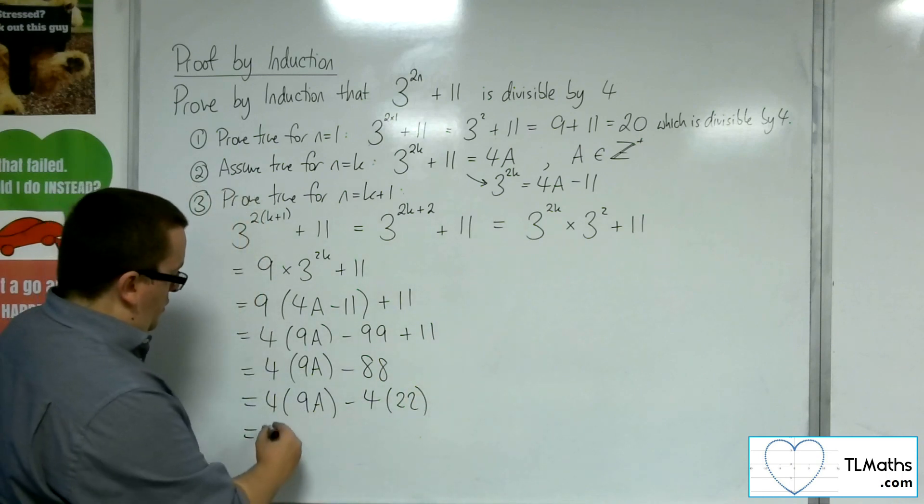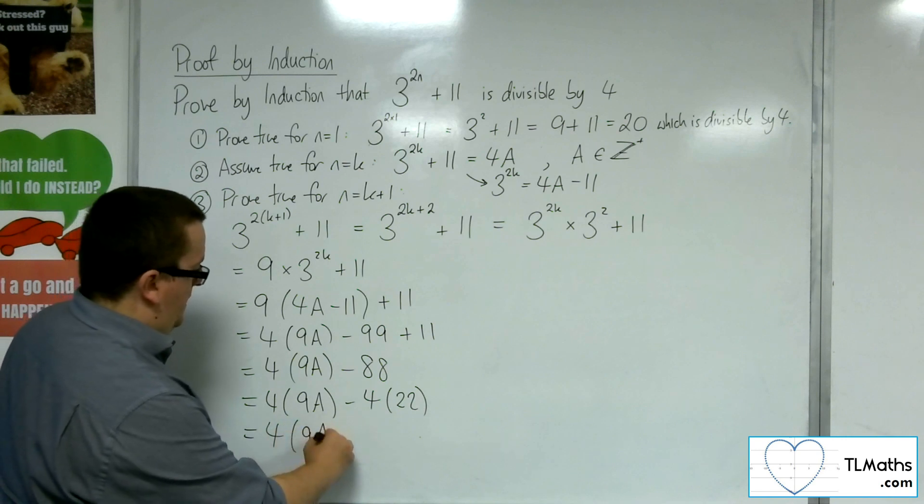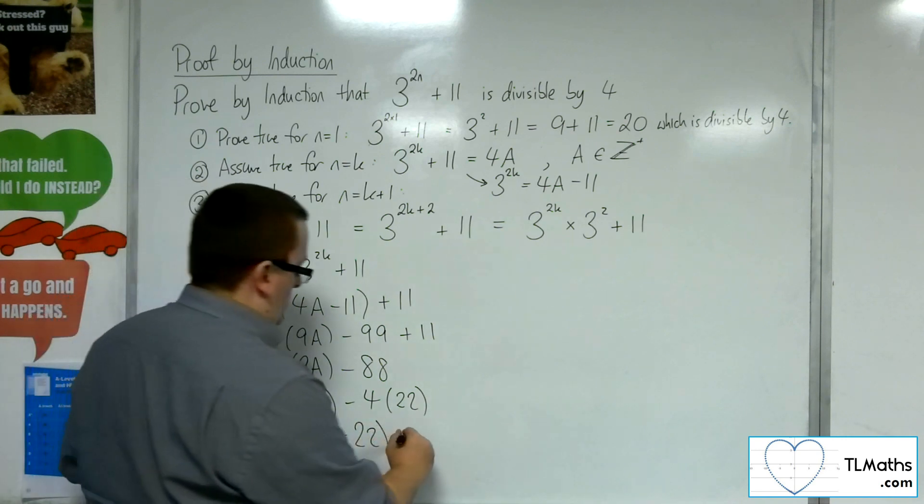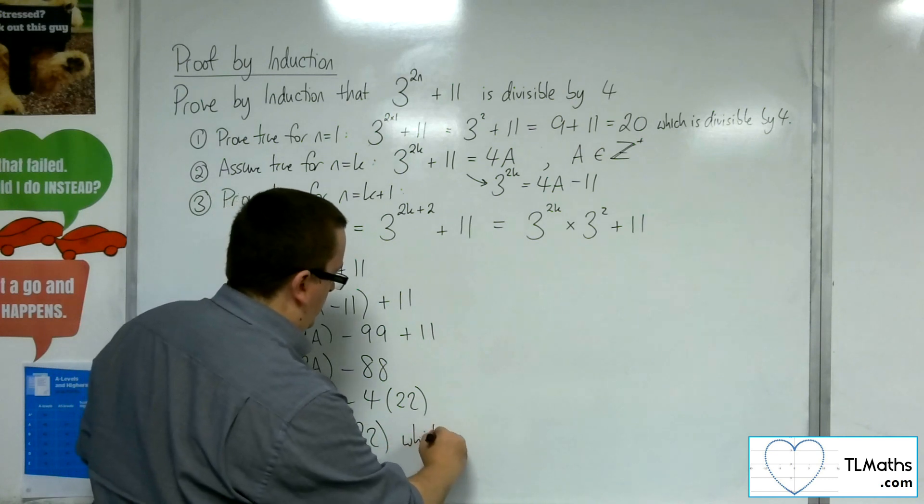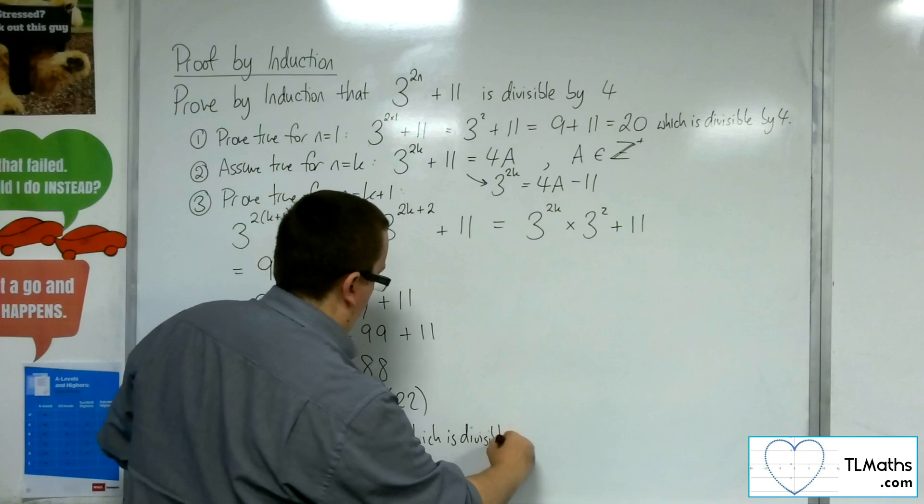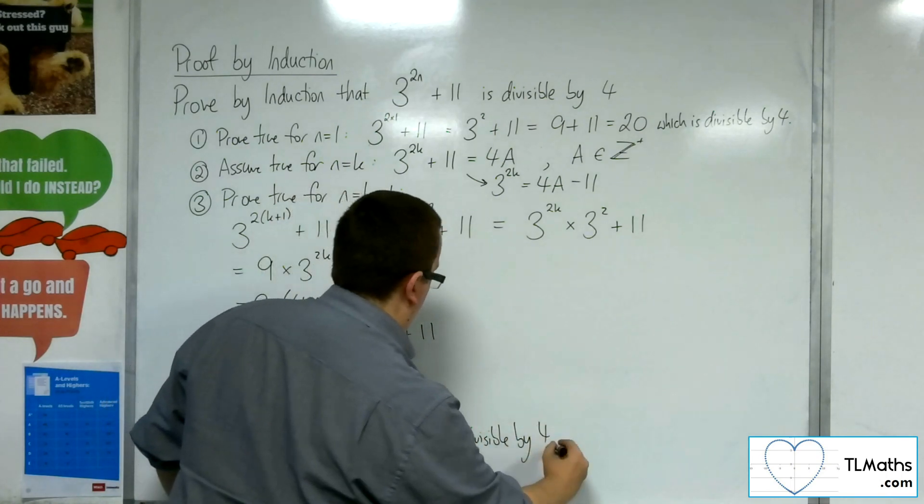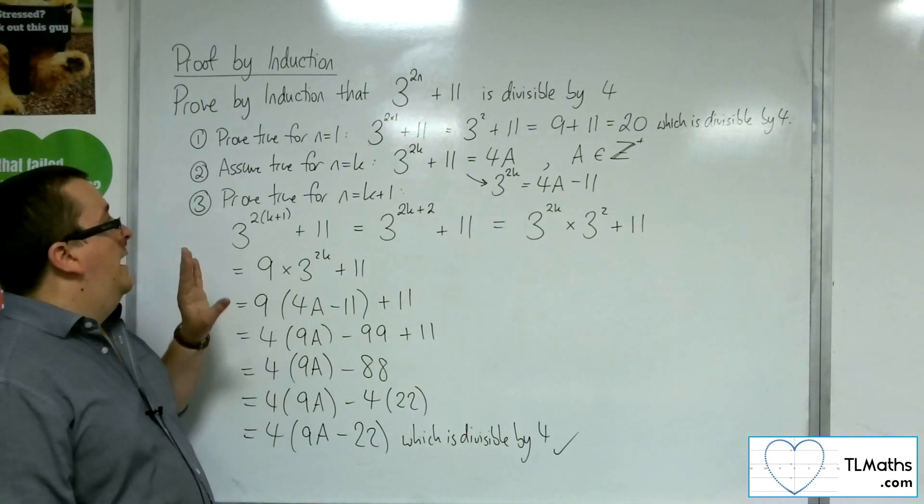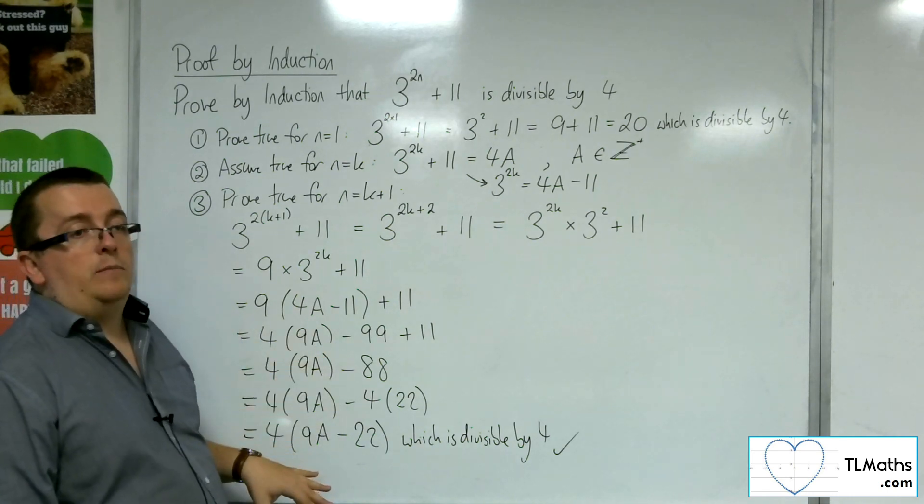Now we could put that into a single bracket, so 4 lots of 9a minus 22, which is divisible by 4. And so we've shown that it's true for n equals k plus 1.